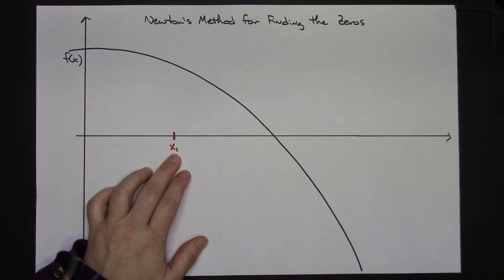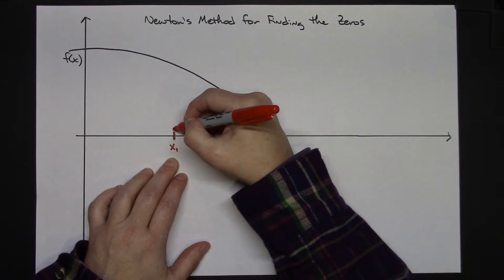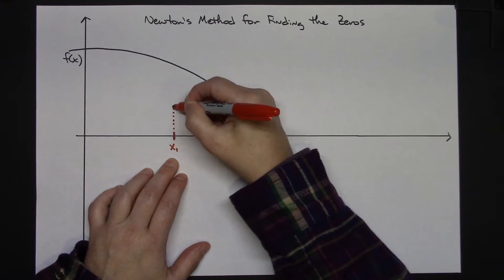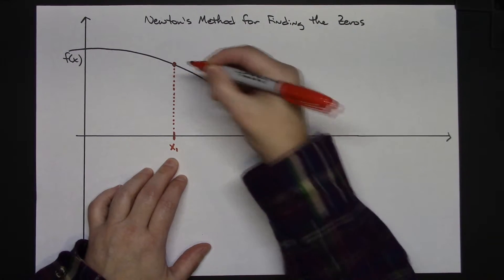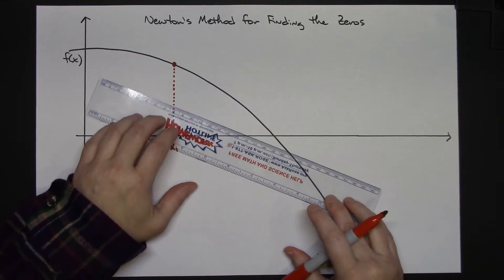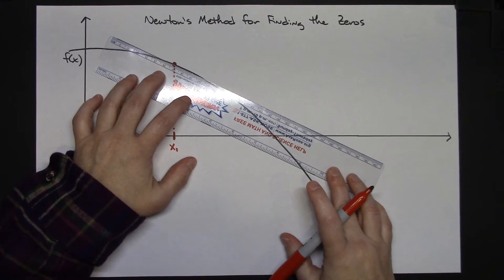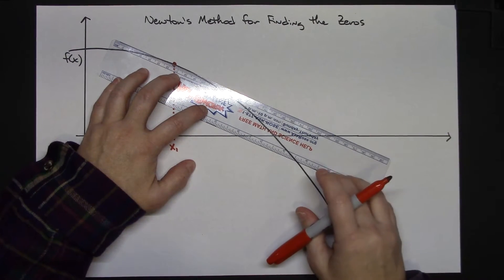Now what Newton's method does, what that iteration formula does is after you make that initial guess, you can draw a vertical line up to your curve. At that point along the curve then you are going to draw a tangent line and you're going to draw your tangent line in such a way that you make sure that it is long enough and crosses the x-axis.